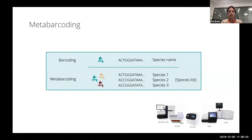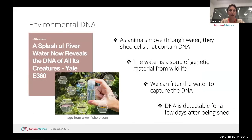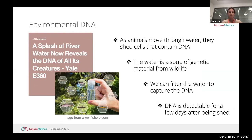You can do metabarcoding on any kind of sample that contains a mixture of different species — I started doing it on insects, you can do it on soil, feces, or pretty much anything. You can also do it on water samples. About 10 years ago we started to understand that just like when we touch something and leave fingerprints containing DNA, animals in or near water are leaving DNA there. The water is basically a soup of the genetic material of all the wildlife that's been around. DNA breaks down and becomes unusable over a period of a few days, so if you detect something, it's a contemporary signal, not a historic one.